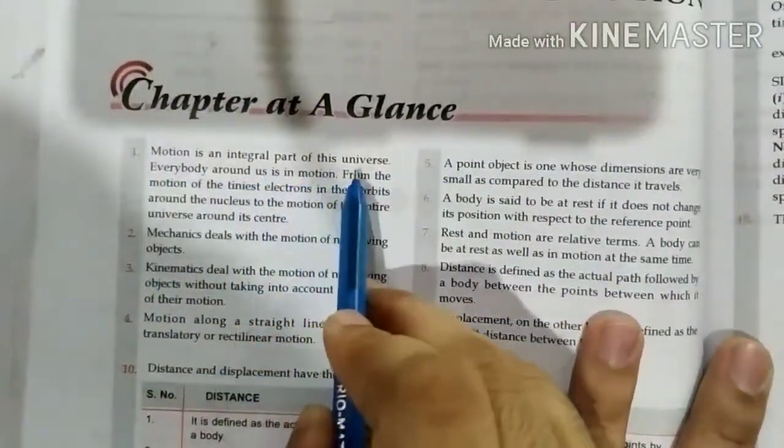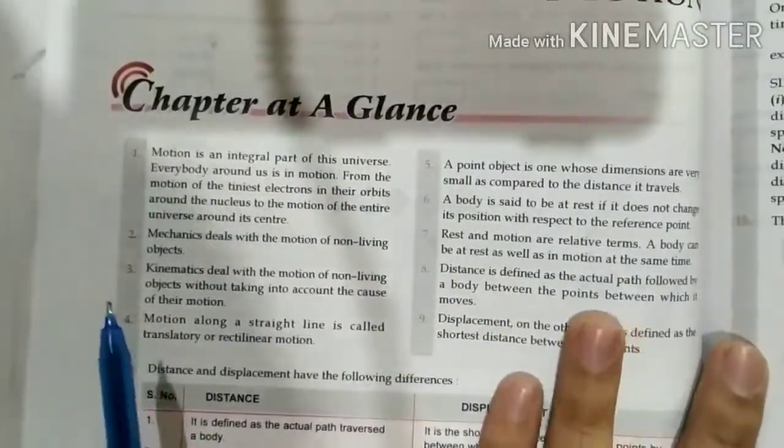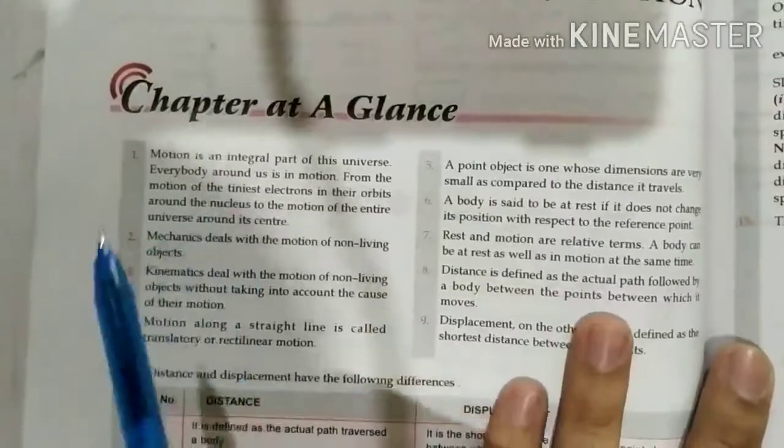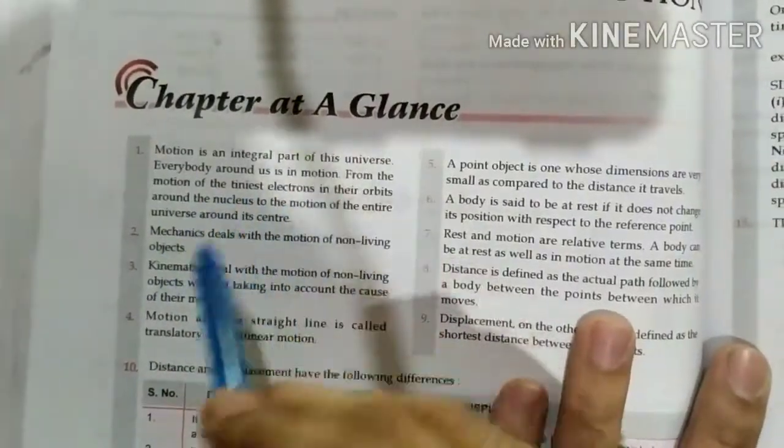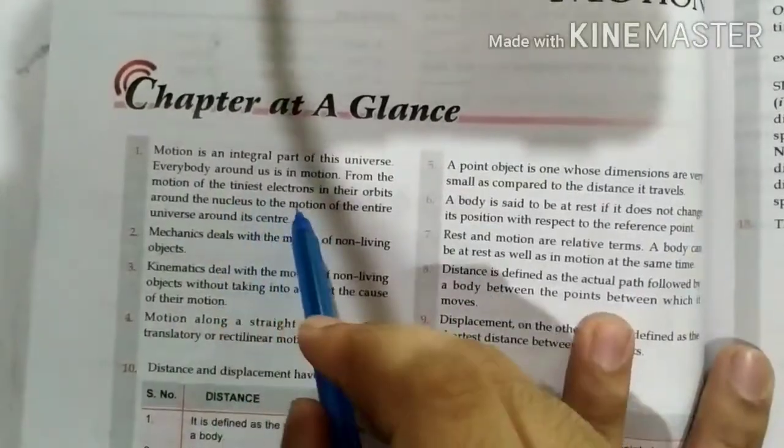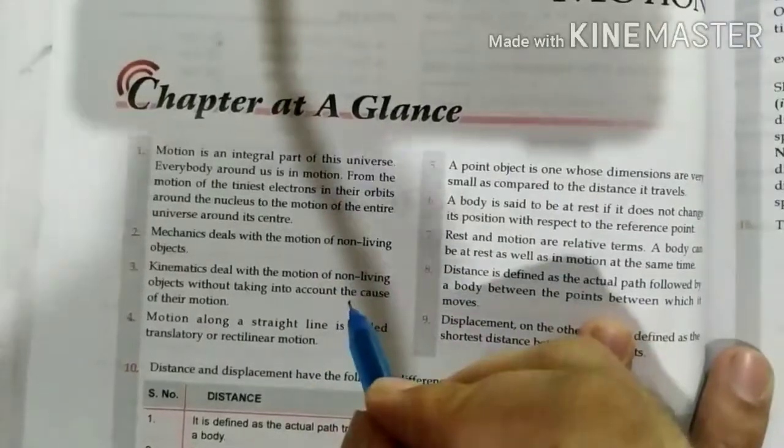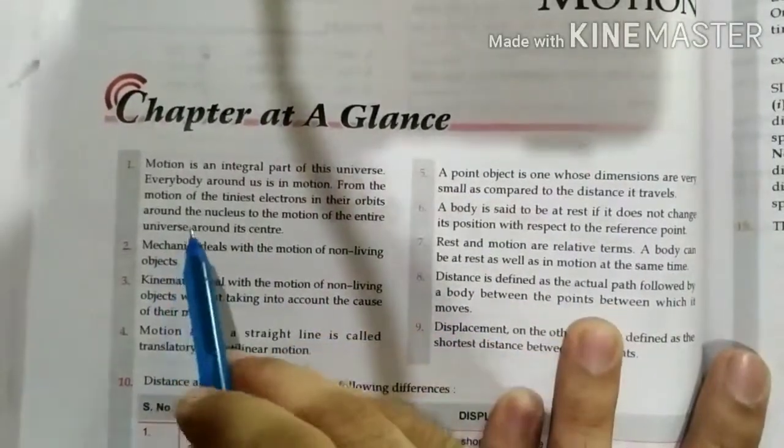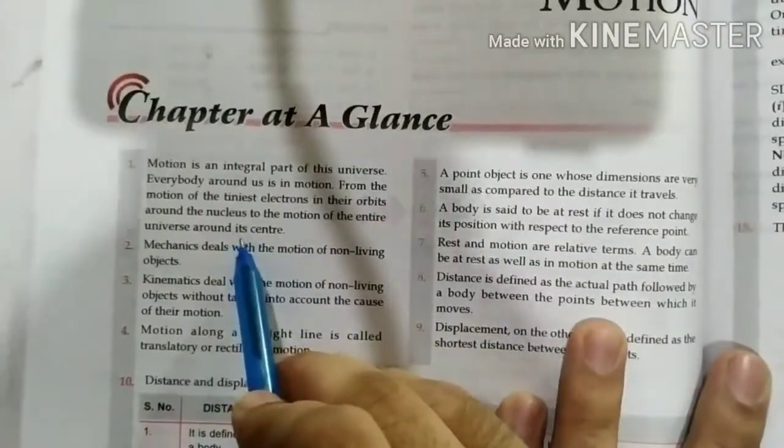Motion is the integral part of the universe. You know motion is the universe integral part. The universe is not different from motion, everybody around us is in motion. From the motion of the tiniest electron in their orbit, whether it be small to small electron, it also moves the nucleus of the entire universe around the inner center.